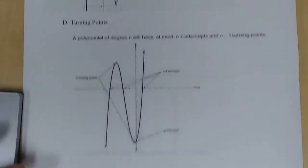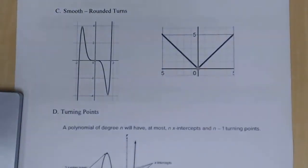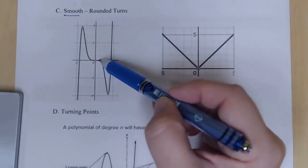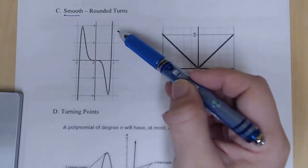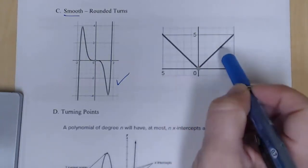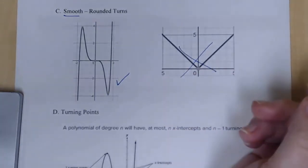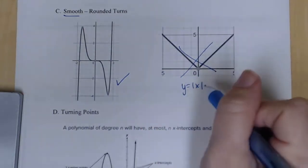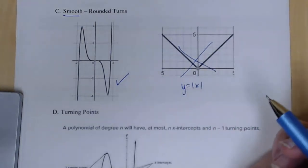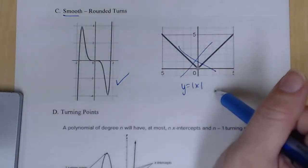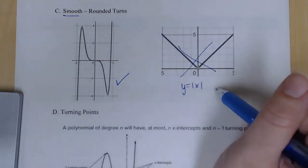Another characteristic is that polynomial functions are smooth, meaning they have rounded turns. A polynomial is continuous and has rounded turns — no sharp corners. Notice that y = |x|, the absolute value function, has a sharp corner. It does not fit the classification of a polynomial function of degree n. It is not smooth, although it is continuous.